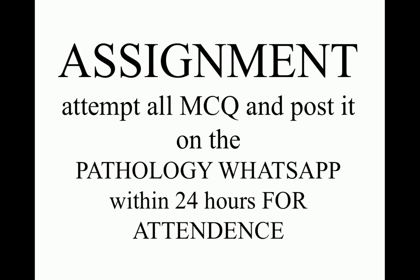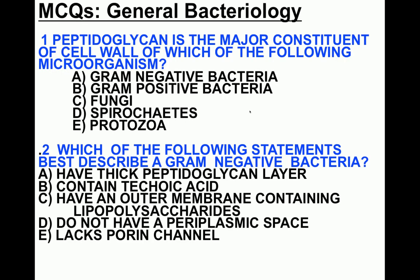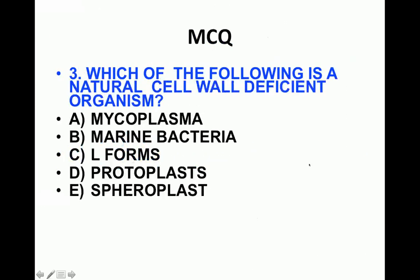For your assignment, answer three MCQs within 24 hours for attendance: Which organism has peptidoglycan as the major constituent of its cell wall? Which statement best describes gram-negative bacteria? And which of the following is a naturally cell wall-deficient organism?